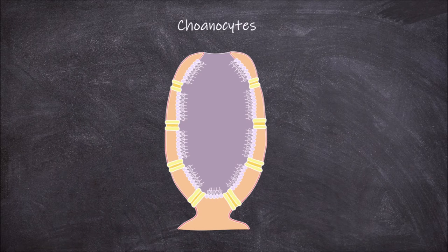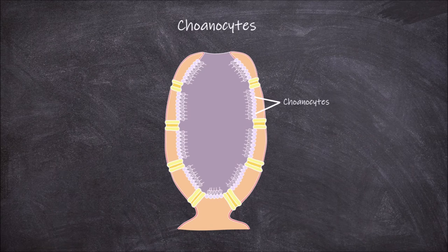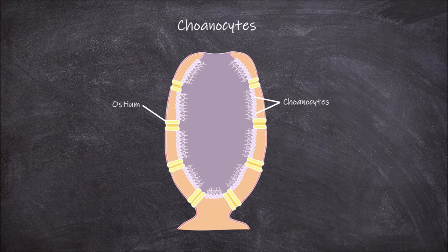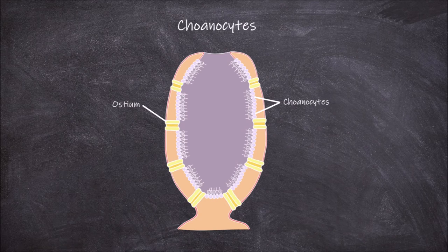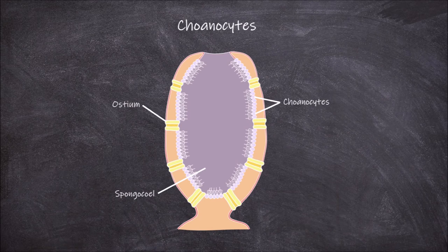Choanocyte cells line the inside layer in the structure of a sponge. Sponges also have cells called ostia, singular ostium, that form pores in the sponge. Inside the sponge is an area known as the spongocoel. The sponge also has a large opening called the osculum.